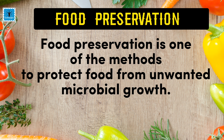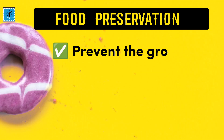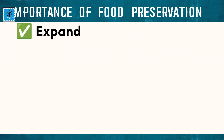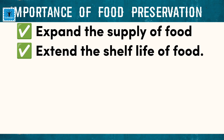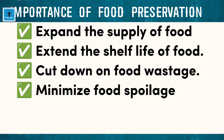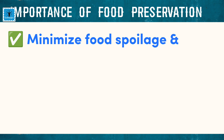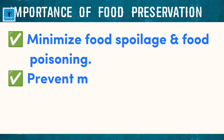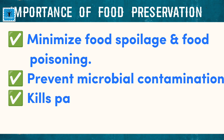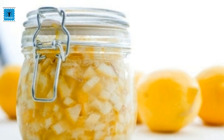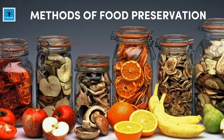The process by which food is treated and handled to stop or slow down food spoilage and loss of quality is called food preservation. Preservation usually involves preventing bacteria, fungi, and other microorganisms from developing, as well as reducing their growth. Food preservation is very important — it expands the supply of food, extends its shelf life, helps cut down on food waste, minimizes food spoilage and food poisoning, and prevents microbial contamination and kills pathogens.